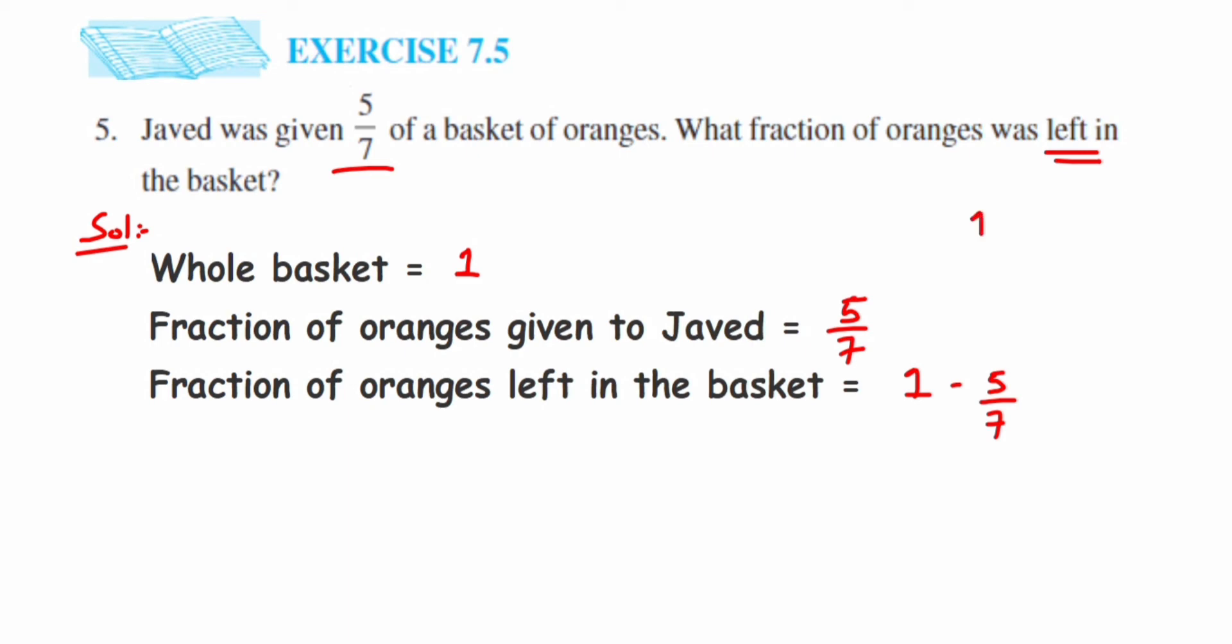The denominator given is 7, so in place of 1, I'm going to put 7/7. That makes these two like fractions. So 7/7 minus 5/7. Seven is in the denominator, and we know in like fractions, you keep the same denominator and subtract the numerators.